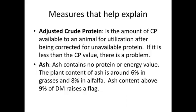We also look at ash content. Ash contains no protein or energy value. Generally, the plant content of ash is around 6% in grasses and about 8% in something like alfalfa. Under a hay production system, ash content should always be below 9%. When we get above 9%, that raises a flag — it indicates lower energy values and will lower animal performance. Most generally, it indicates that soil has become part of that forage. Common causes include cutting too low, forage lodging so soil gets onto it, or a heavy rain or flood event that washed soil onto the forage.